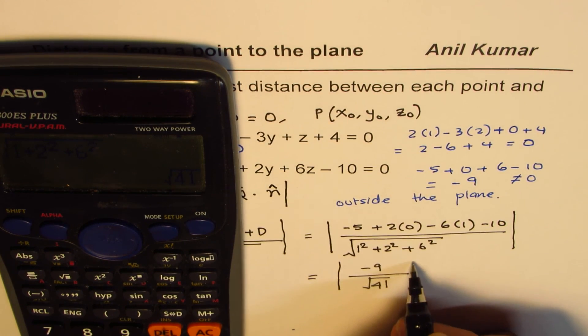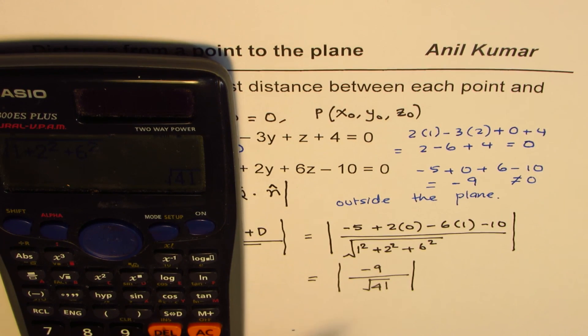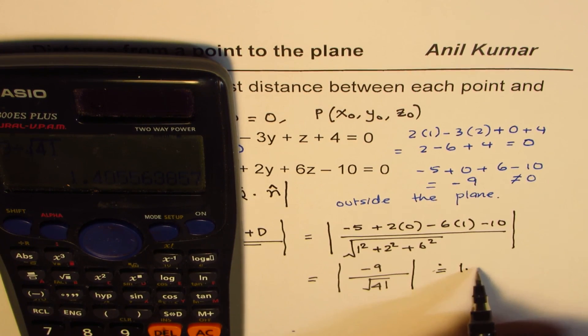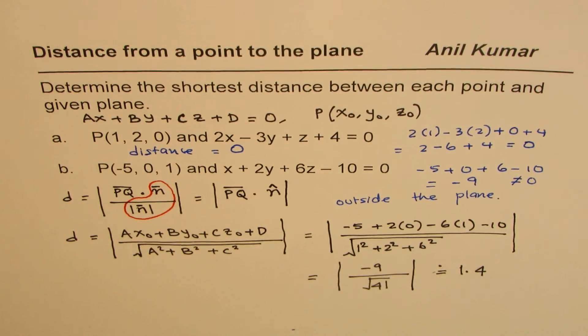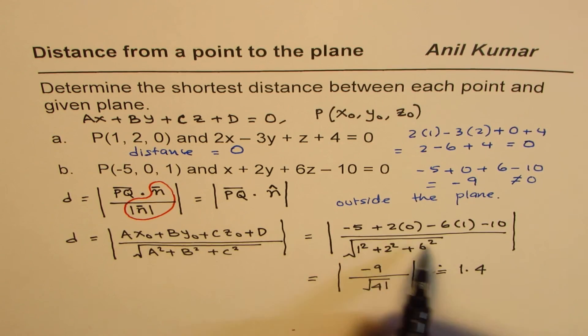Now, since distances are always positive, you have to take the absolute value. So, that becomes your answer, 9 divided by square root of 41. In decimals, it could be approximately 1.4. So, you could answer like this also.